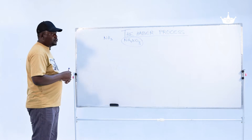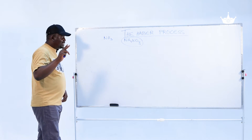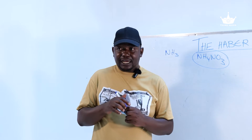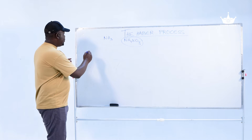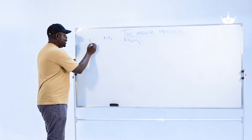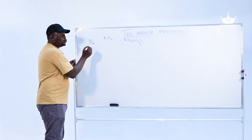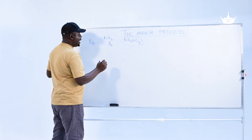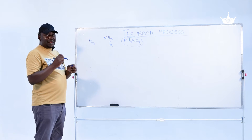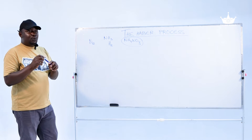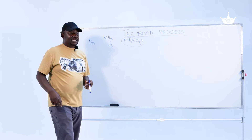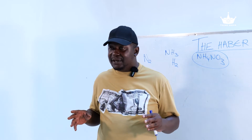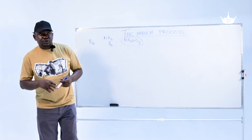Ammonia is produced from two raw materials: nitrogen and hydrogen. Nitrogen is a diatomic molecule, N2, and hydrogen is a diatomic molecule, H2, as well. When we combine nitrogen and hydrogen in the ratio one to three, respectively, we're going to get ammonia.